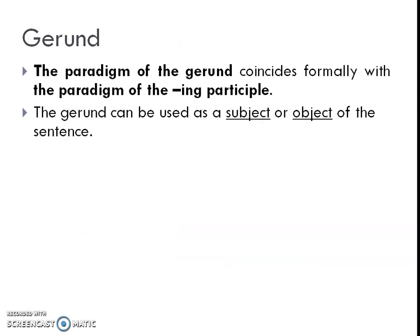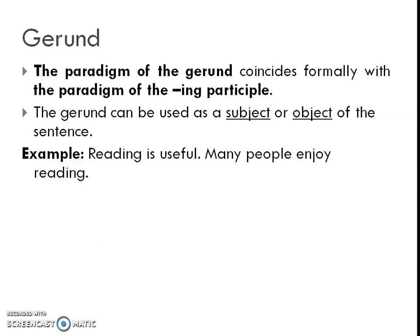The gerund is the -ing form of the verb used as both noun and verb. The gerund can be used as a subject or object of the sentence. For example: 'Reading is useful' — here 'reading' acts as a noun (subject). 'Many people enjoy reading' — here 'reading' is used as a verb (object). So that's how the gerund behaves in a sentence.